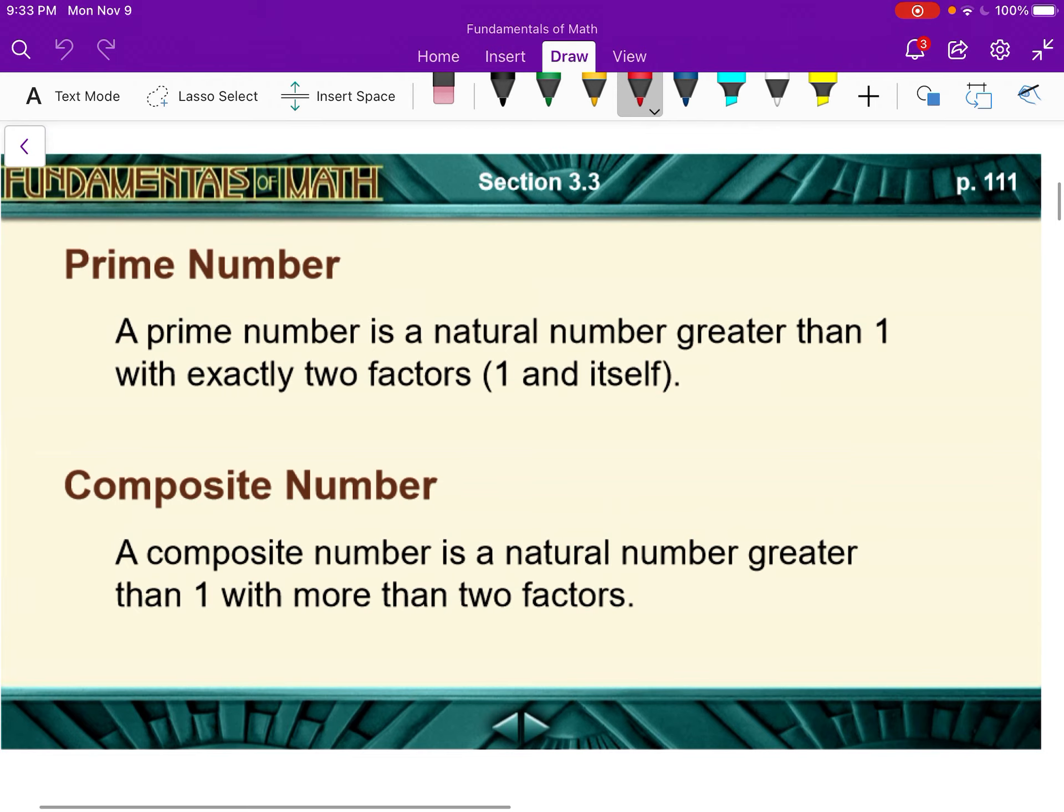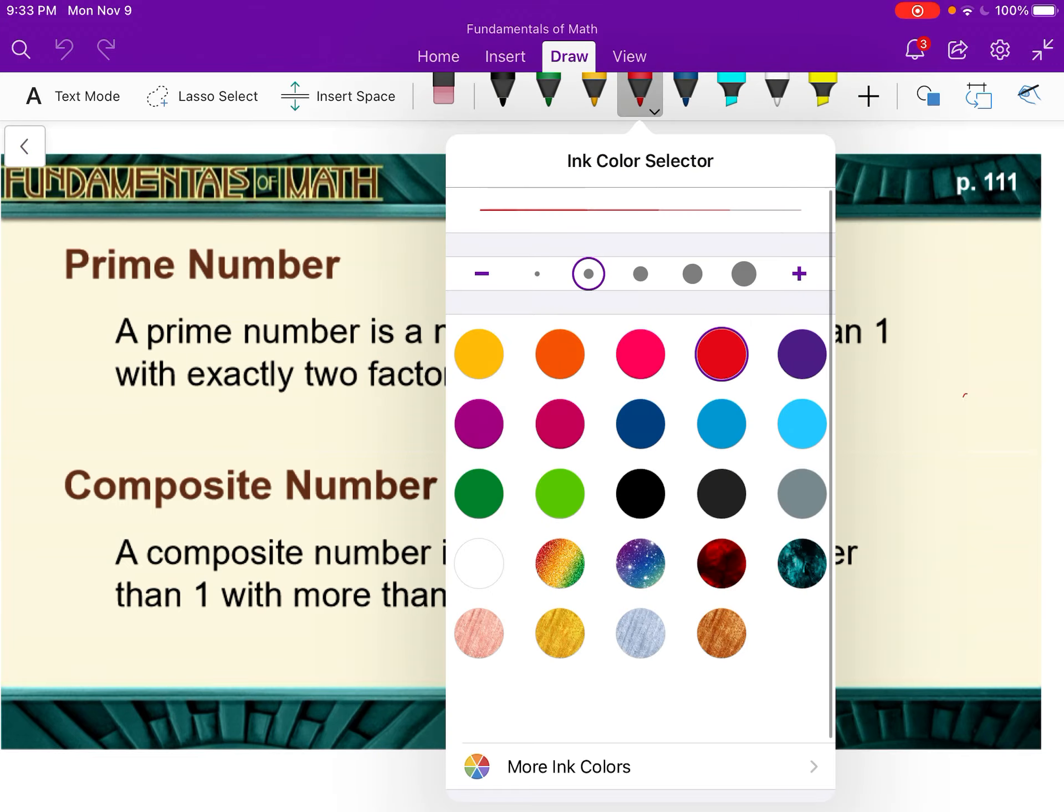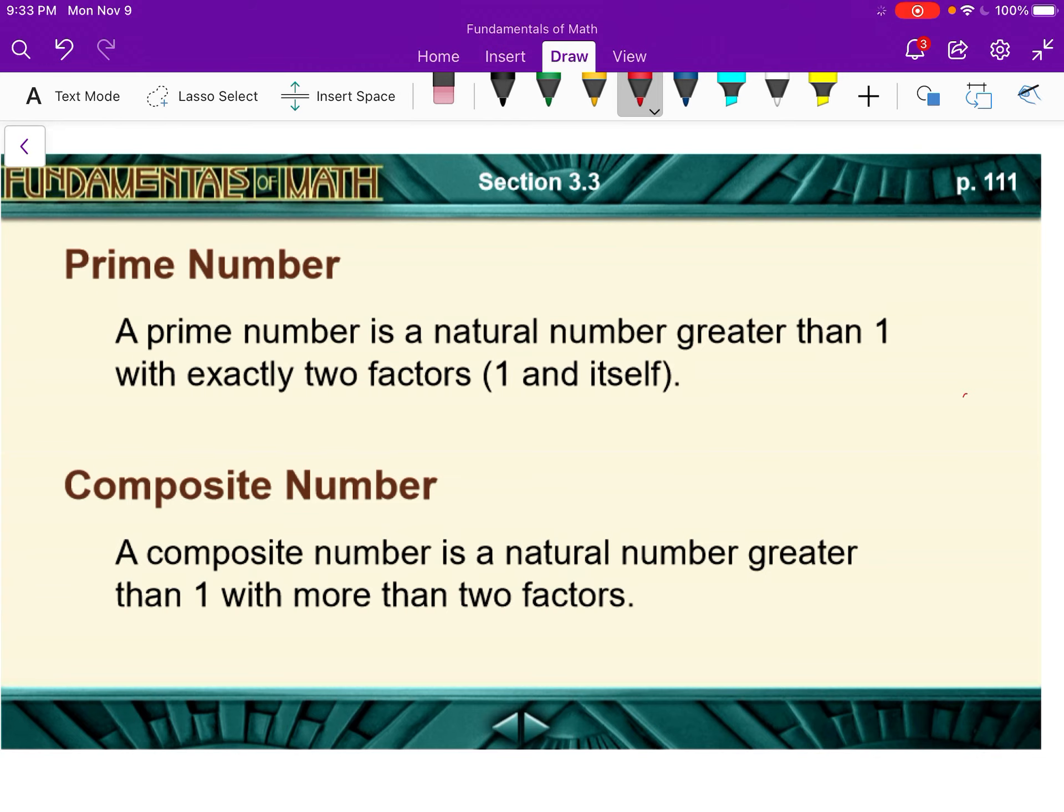First of all, a prime number is a natural number greater than 1 with exactly two factors, 1 and itself. So a couple really important things here is it's greater than 1.